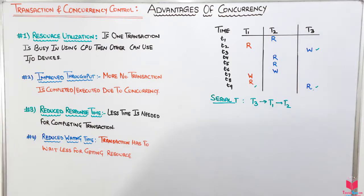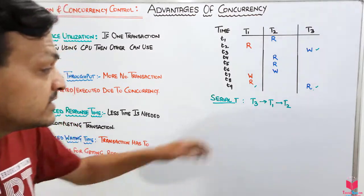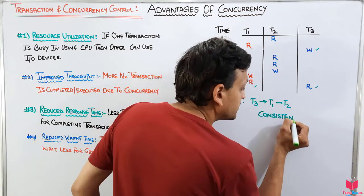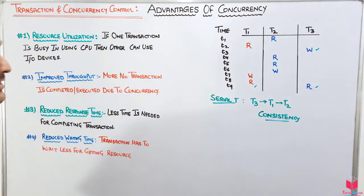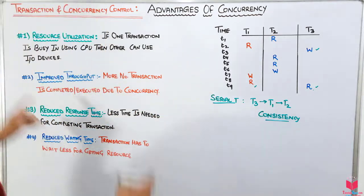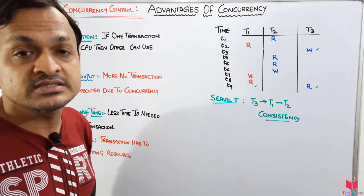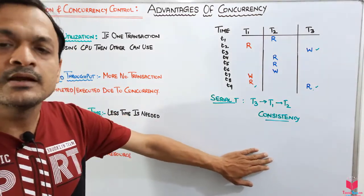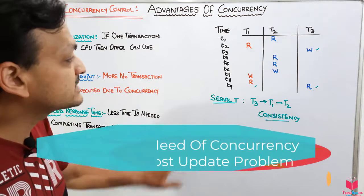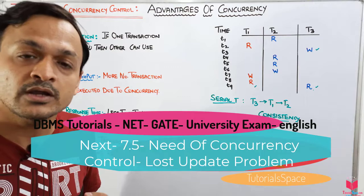So those are all the advantages of concurrency. In the next video, we will see the disadvantages of serial transactions and also the disadvantages of concurrency — where sometimes it may cause consistency issues. Stay tuned for the next video where we will study the disadvantages of concurrent transactions.